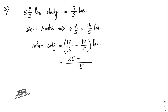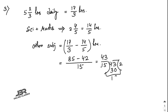85 minus 42 equals 43, giving 43/15. Converting to a mixed fraction: 15 times 2 is 30, remainder 13, so the answer is 2 and 13/15 hours.